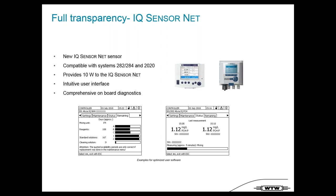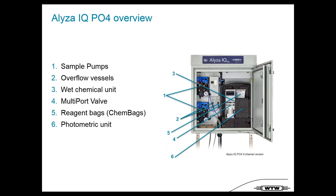ELISA has extensive on-board diagnostics — the complete measurement unit controls every step internally, so you don't need to know many details. Inside ELISA you will find integrated sample pumps, integrated overflow vessels, a wet chemical unit, the multi-port valve, space for reagent cam bags, and the photometer unit.